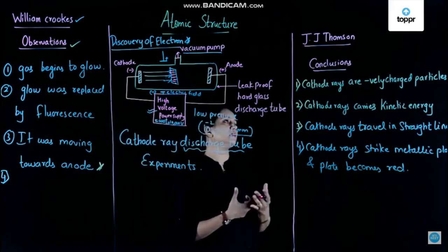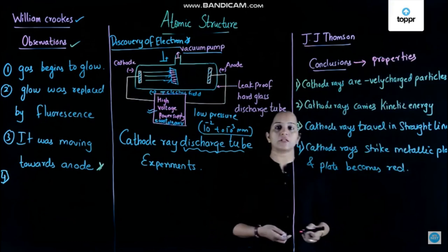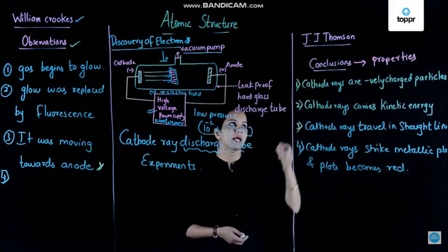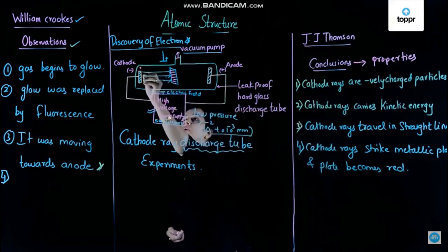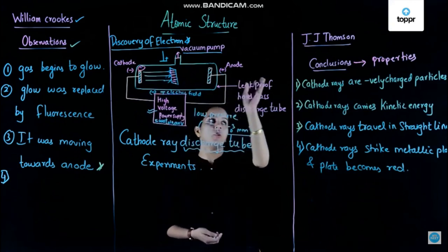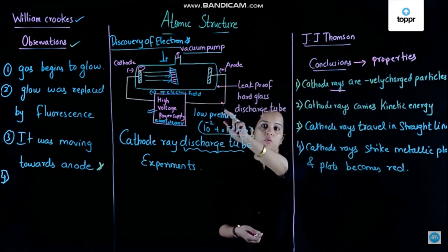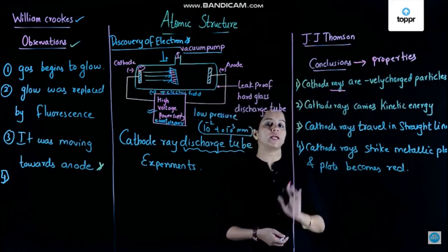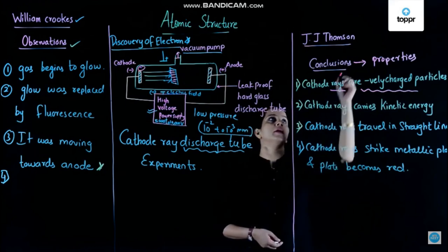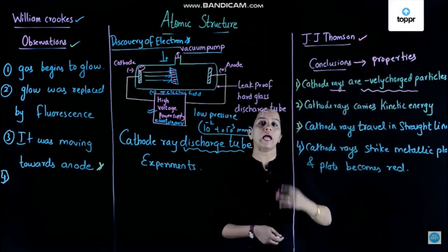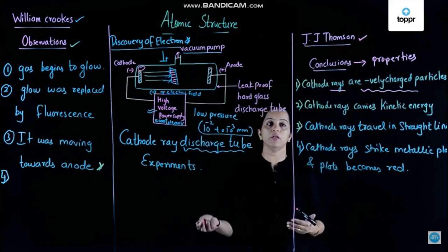So these are the conclusions, and based on them we can state the properties of cathode rays. Cathode rays are rays which emerge out from the cathode and move towards the anode. Since these rays were moving towards the positively charged electrode, it was declared that these rays are negatively charged particles. The name 'electron' was given by Sir J.J. Thompson, who drew conclusions from all the observations of the experiment conducted by William Crookes.